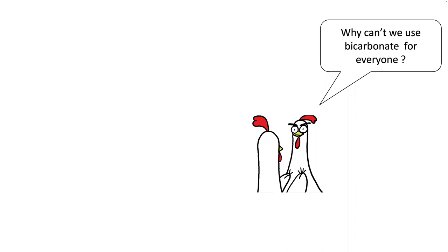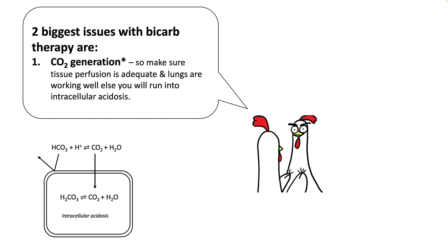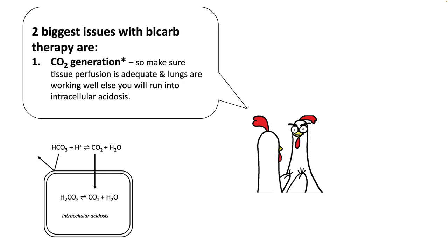Bicarb therapy is commonly used in the ICU, on floors, and in the ER. However, you have to understand two big complications of bicarb therapy. The first is increased CO2 generation. In acidosis, if you give bicarb, it combines to form carbon dioxide and water. Since CO2 is easily diffusible across the cell membrane, it can enter the cell and can cause intracellular acidosis. The bicarb ion is a charged ion, so it doesn't penetrate the cell membrane as effectively. So if you are unable to ventilate and get rid of the carbon dioxide, you are going to cause more problems. Intracellular acidosis can be detrimental to cell function and result in poor outcomes. The jury is still out — some studies have proven intracellular acidosis while others have refuted this construct. In one study, they found increased CO2 generation by 40% when using a bicarb drip at standard rates.